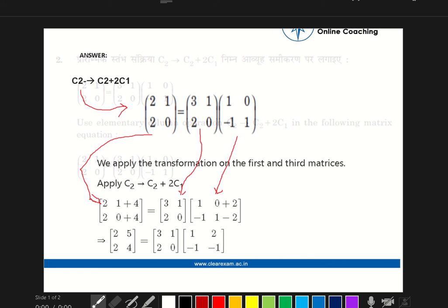Okay, let's implement this. We have to apply column 2 plus 2C1 on column 2. Now let's solve the RHS. We will get 2 as it is, 2 as it is. We will implement 1 on 0, so according to the question we have to implement 1 plus 4, 0 plus 4. Now similarly in the LHS.